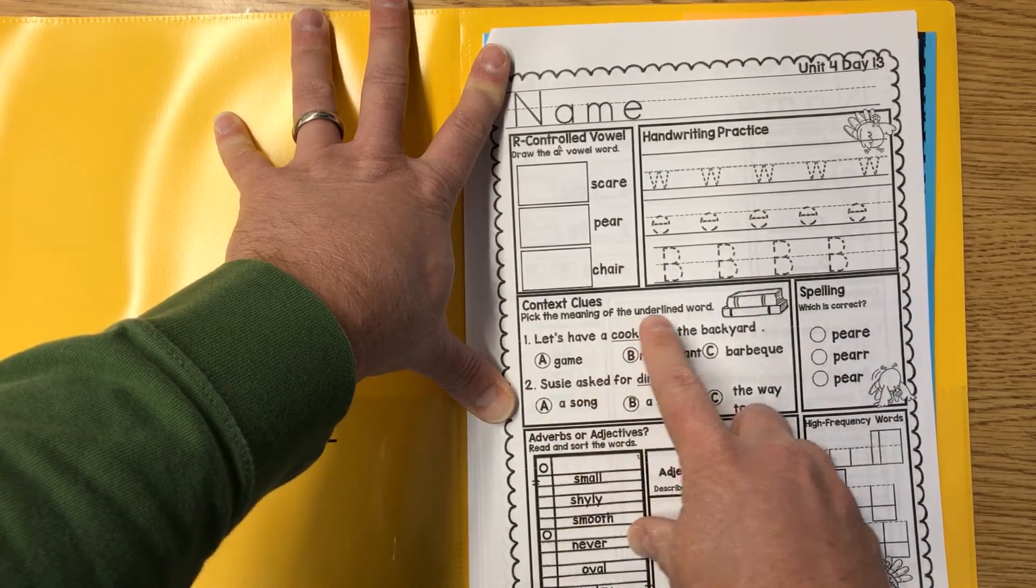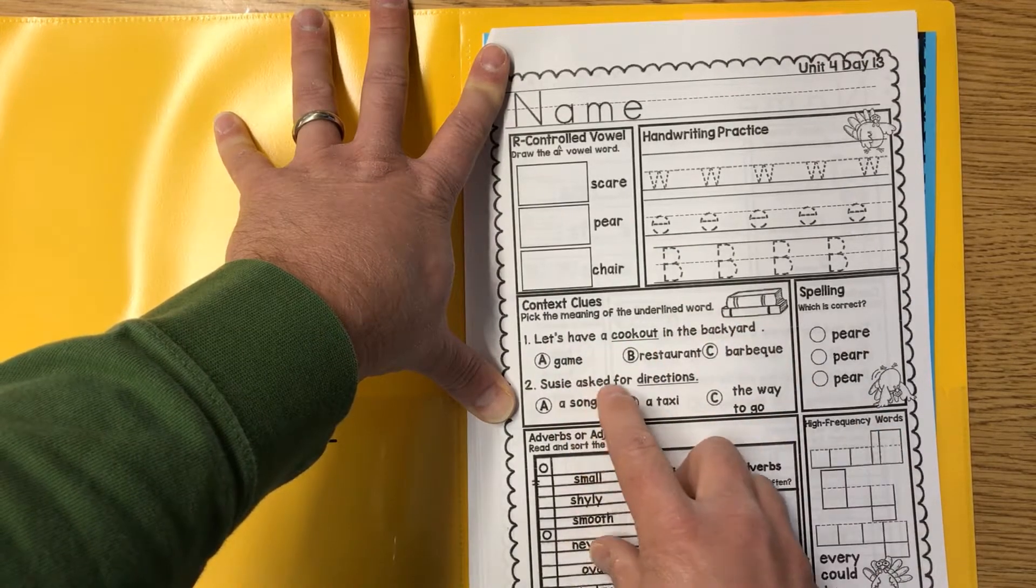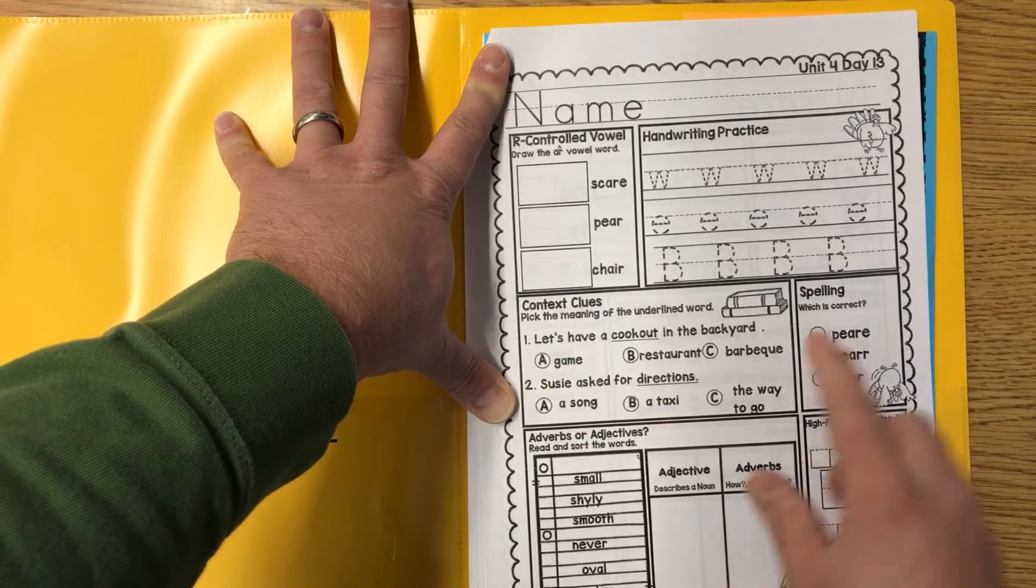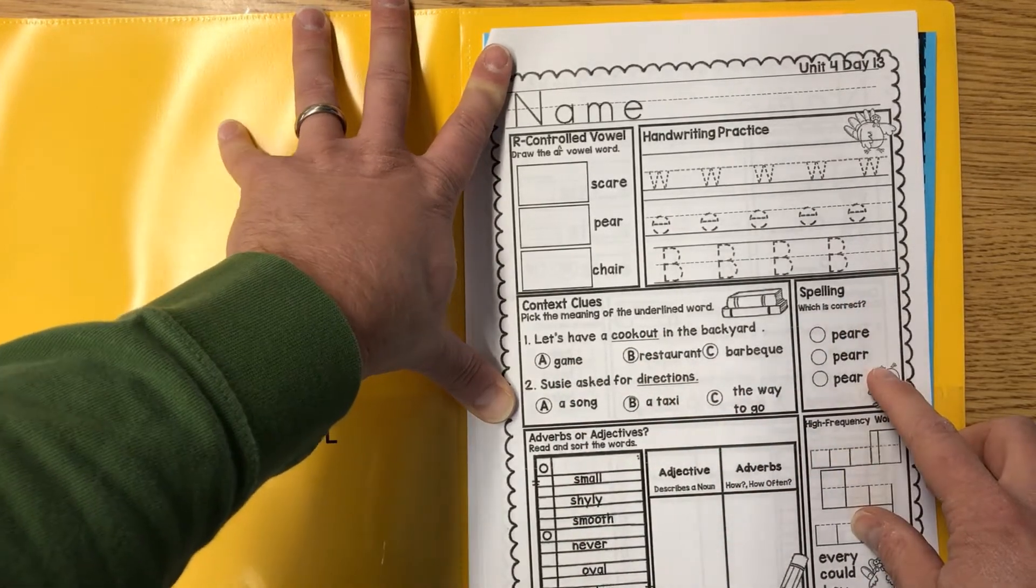Context clues, pick the meaning of the underlined word. Let's have a cookout in the backyard. Susie asked for directions, cookout and directions. Spelling, which is correct. How do you spell pair, pair?